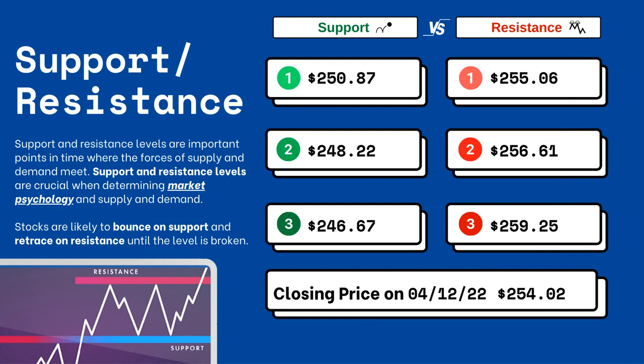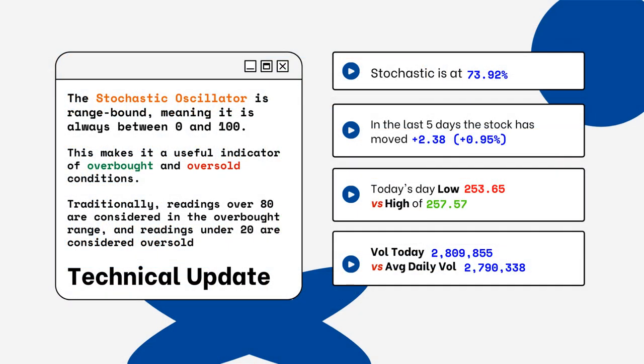Support and resistance levels are very important because they let you know where supply and demand are meeting. On the right side you'll see three support levels and also three resistance levels — these are areas you want to watch. Stocks typically bounce at support levels and resist at resistance levels, meaning they'll retrace from that top level.